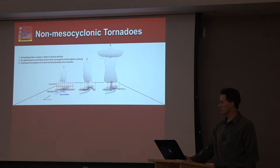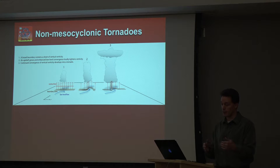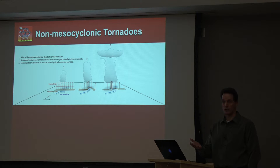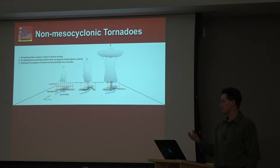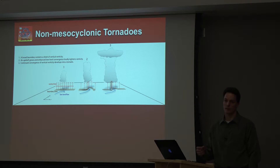For non-mesocyclone tornadoes, you don't need to memorize every detail of the diagram. Typically we're looking for some sort of cyclonic shear boundary in the low levels, where vertical vorticity is already present along the boundary — a cyclonic change in winds across the boundary near the surface. You get updraft development atop the boundary, which concentrates the vorticity and convergence, rearranges and tightens the circulation, and then stretching of the deeper updraft can result in tornado genesis if we have sufficient stretching and vertical vorticity.